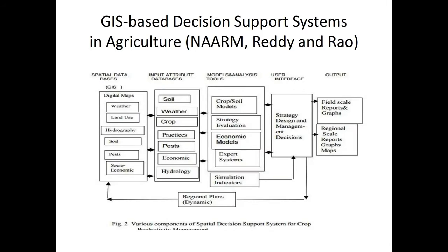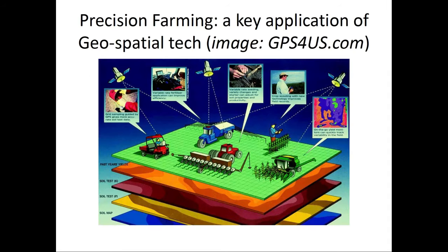GIS-based decision support systems in agriculture are becoming increasingly important. My colleagues, the late Dr. Reddy and Dr. H. Rao, have been very active in this area. They have identified digital maps as well as input attribute databases and the types of decisions they can support, primarily at a regional level, but this can be scaled to work at micro-regional level as well. Precision farming is going to be a key application of geospatial technology. At this time it is capital intensive, but we should be able to envision precision farming for small farmers, at which time many of you doing this course should be experts in GIS applications in agriculture.